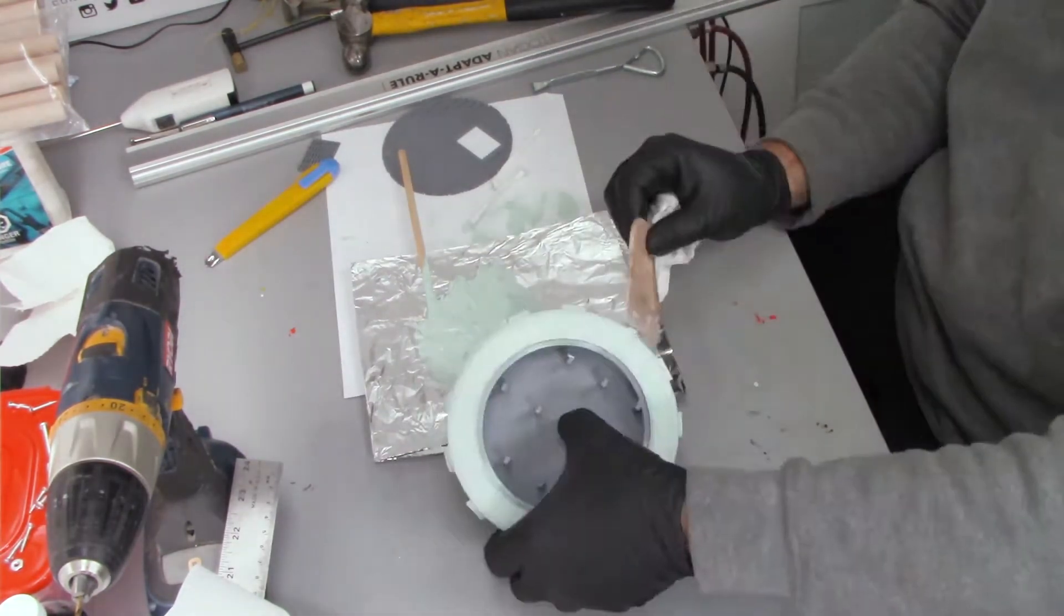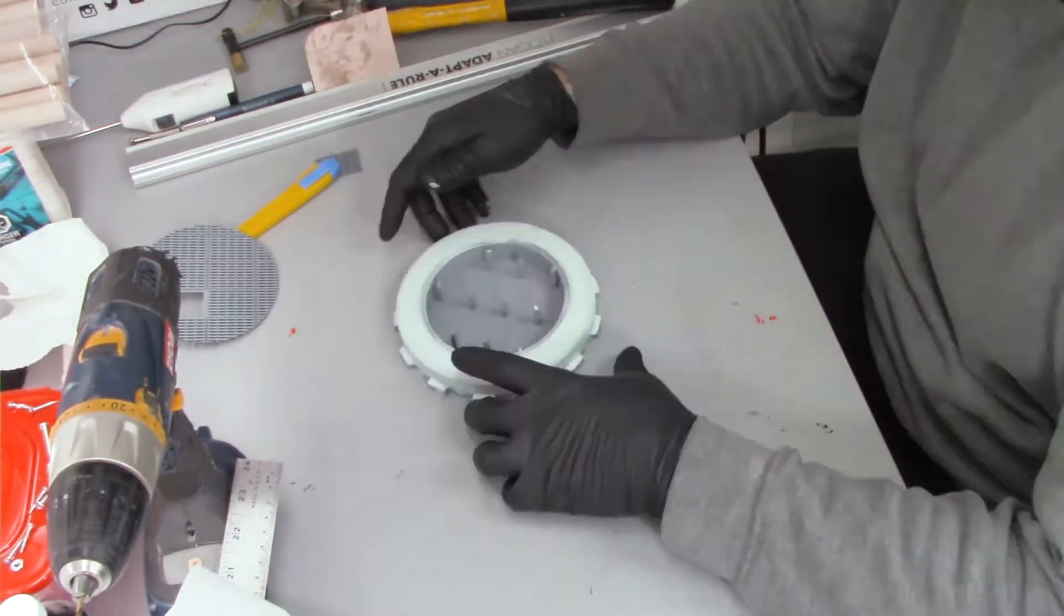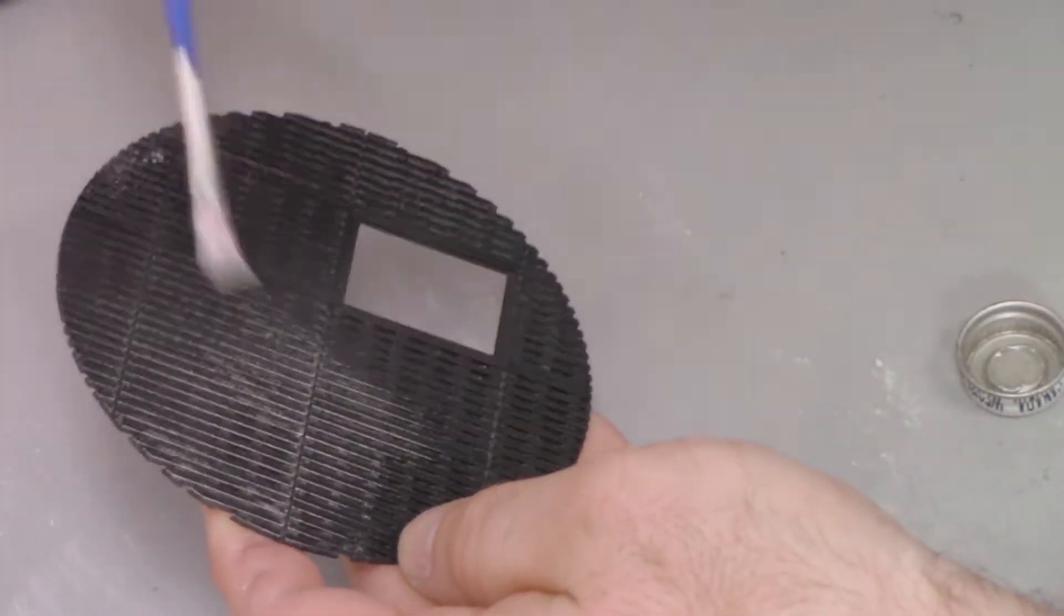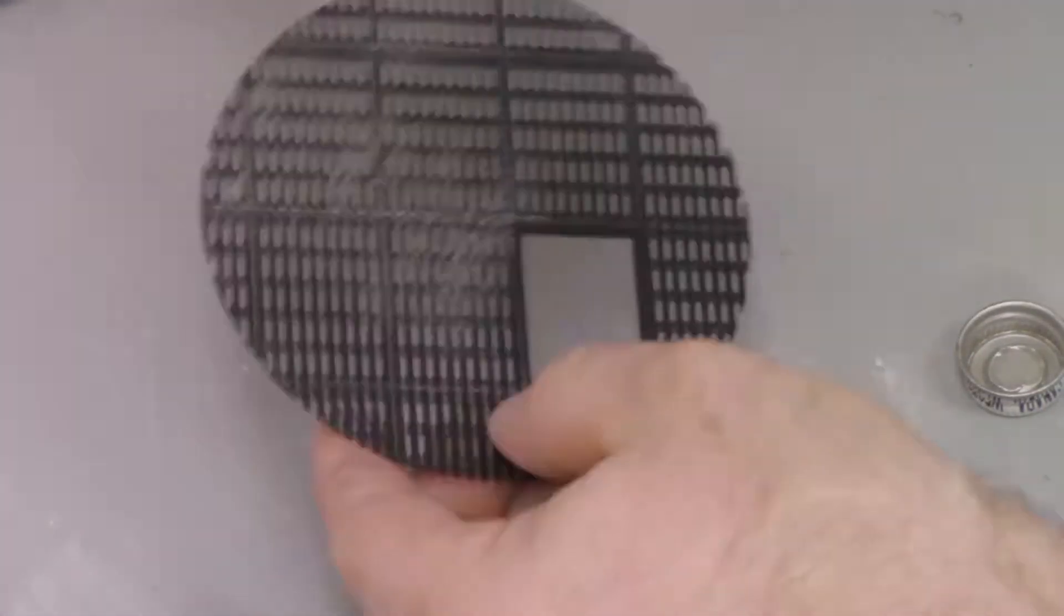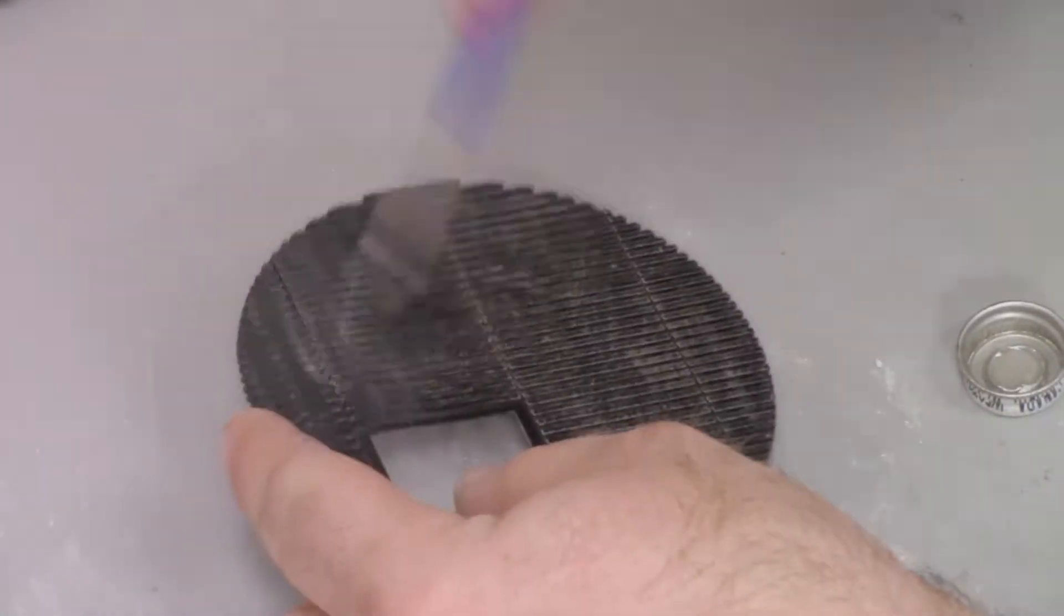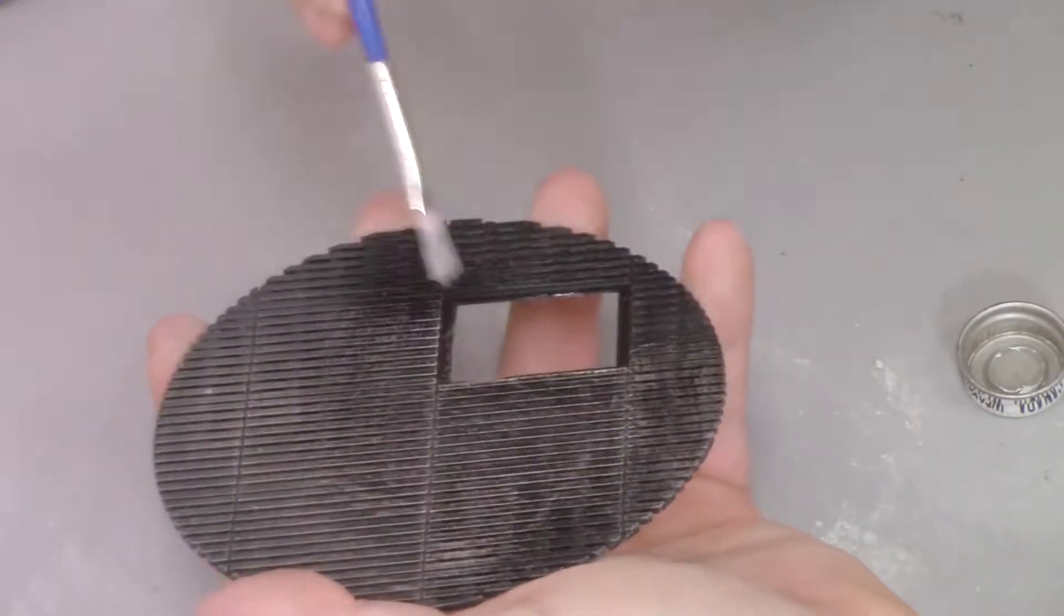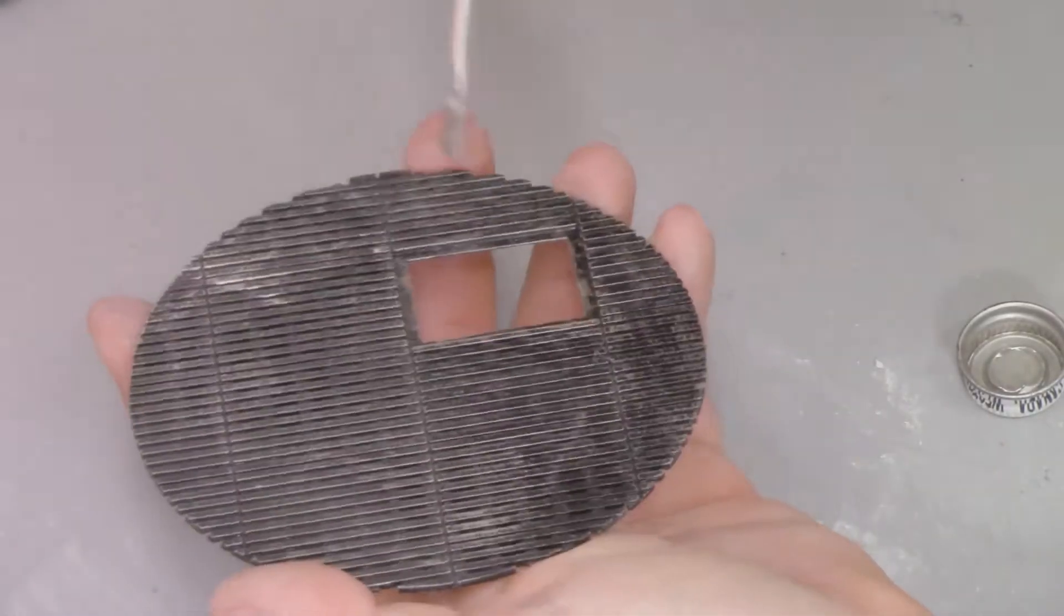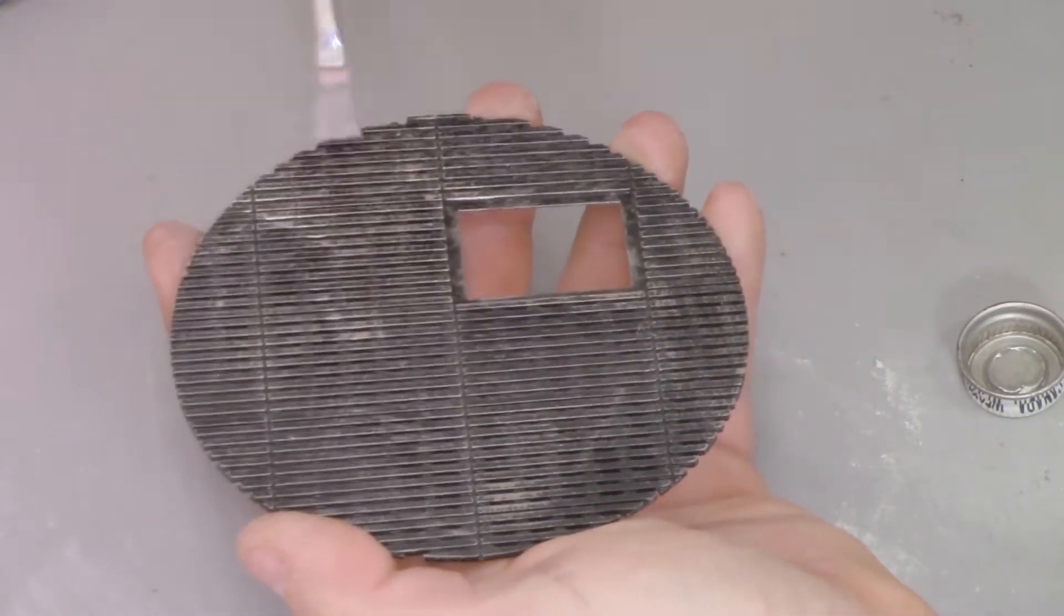Once I've got the coat of Bondo on, I move on to sanding. I'm not going to bore you by showing you that. But what I am going to do here after I've primed the grill and painted it black, now I'm going to go in and dry brush some silver enamel paint onto it just to pick up the highlights and make it look a little worn and used. You can spend as much time on this as you want. I didn't really do a great job. I'm kind of just plowing through it because I just wanted to get this done.